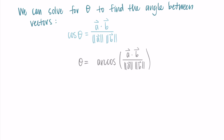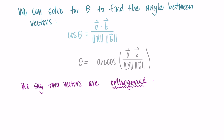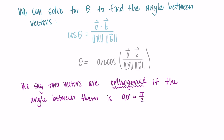We'll be talking more about angles between vectors using the dot product. One new vocabulary word: we say two vectors are orthogonal if the angle between them is 90 degrees, or pi over two. This is like being perpendicular — if two lines are perpendicular there's a 90-degree angle between them. We say two vectors are orthogonal, so keep in mind those two words are basically synonyms. We just use the specific word orthogonal for vectors.